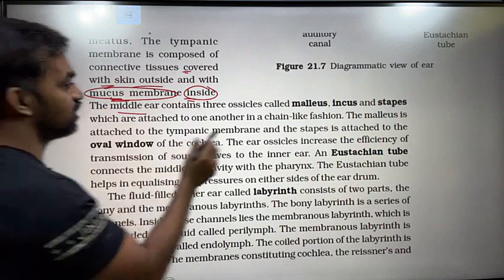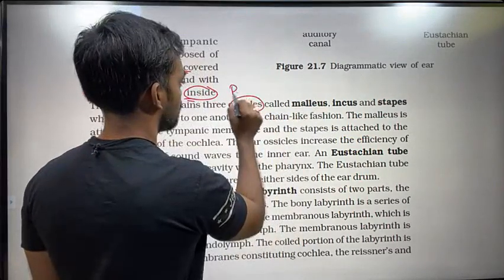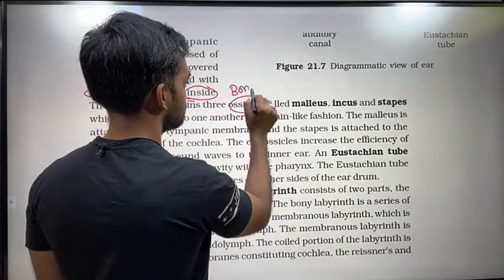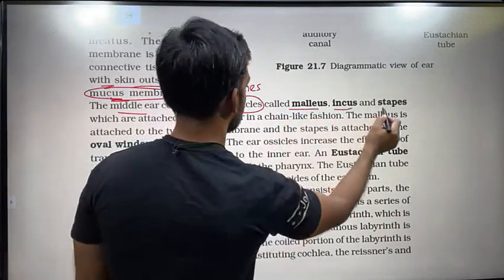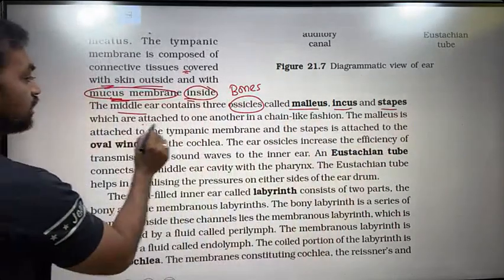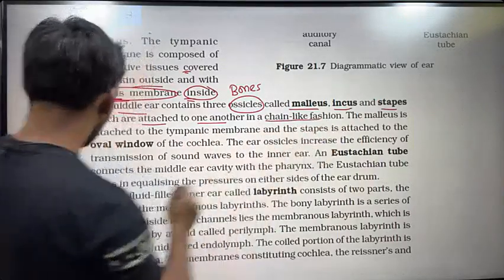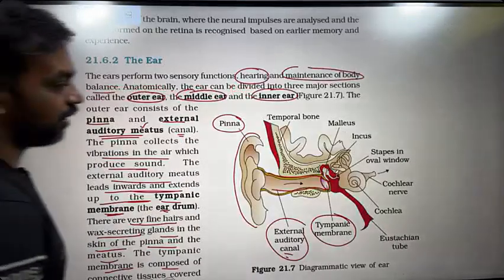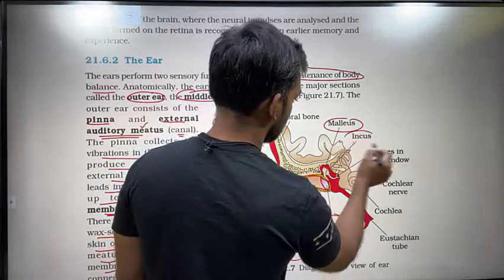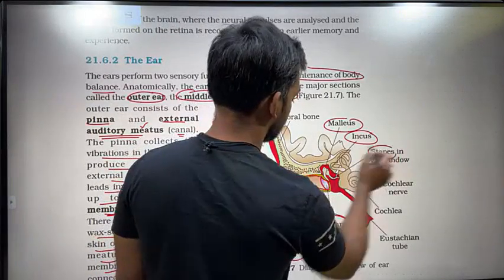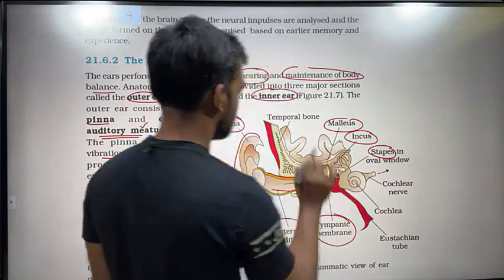The middle ear consists of three ossicles — small bones called the malleus, incus, and stapes — which are attached to one another in a chain-like fashion.